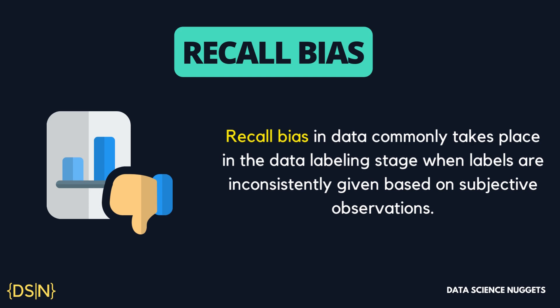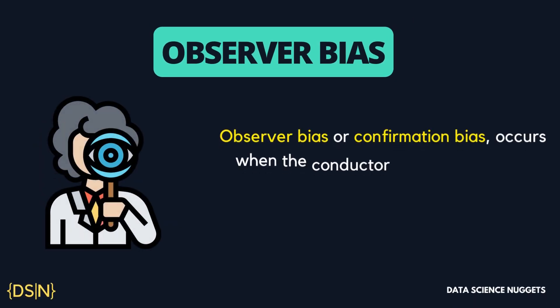Moving on to recall bias. Recall bias commonly takes place in the data labeling stage when labels are inconsistently assigned based on subjective observations. This is also known as the false positive rate. In machine learning, recall is defined as the rate of how many unseen points a model labels accurately over the total number of observations. For example, a group of test subjects sharing how many calories they consume per day over the last week — since they cannot recall the precise amount, they provide an estimation, which takes away from the true value, resulting in recall bias.